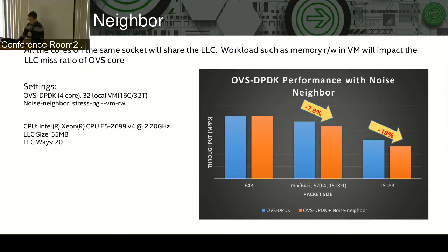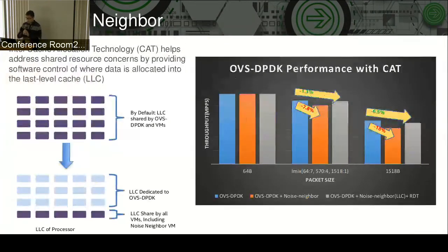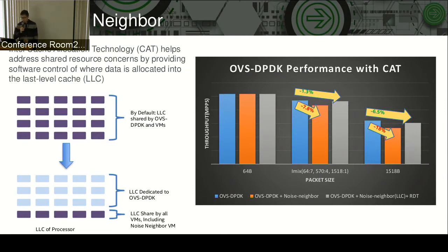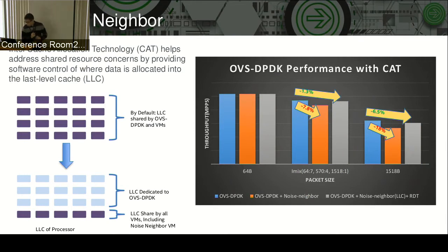Intel Cache Allocation Technology (CAT) can help reduce this performance impact. We can use CAT to allocate part of the last level cache to the OVS core to guarantee the performance. For example, on this processor by default we have 20 last level cache ways, shared by OVS core and VM cores. But if we dedicate 15 cache ways to the OVS core, we can see that the performance drop has been reduced a lot — to about 1.4% for IMIX packets and about 1.3% for large packets. So it is a huge improvement.